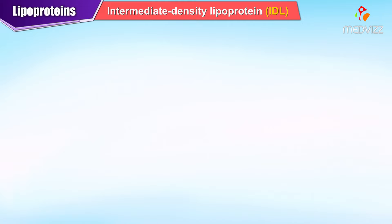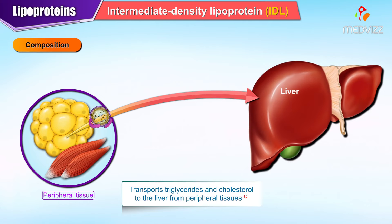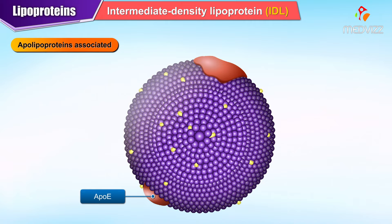Intermediate density lipoprotein or IDL is composed of cholesterol and triglycerides. It is formed from degradation of VLDL. It transports triglycerides and cholesterol to the liver from the peripheral tissues. Apolipoproteins associated are ApoE and B100.